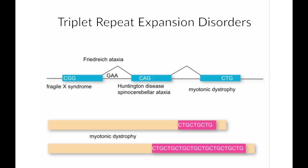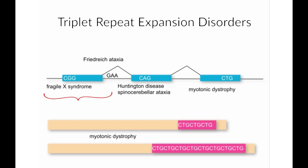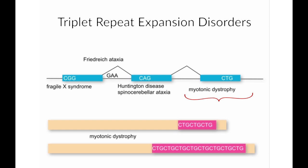Anticipation tends to occur in triplet repeat expansion disorders. These are conditions in which a particular triplet of DNA bases is repeated multiple times normally, and where expansion of that repeat underlies the pathology. In one gene, a CGG repeat in the promoter region leads to fragile X syndrome, a form of X-linked intellectual disability. In another gene, a CAG repeat within an exon, which encodes a polyglutamine repeat, causes Huntington disease, and there are various other genes associated with spinocerebellar ataxia that have a similar type of mutation. In the condition myotonic dystrophy, a CTG repeat in the 3' untranslated region leads to that condition. Friedreich ataxia is associated with a GAA repeat that occurs within an intron.